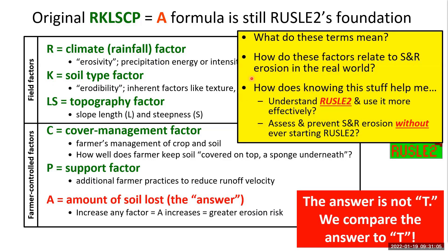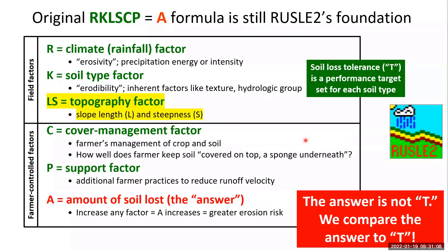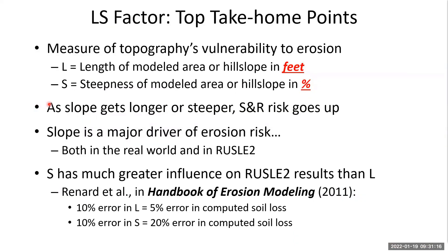So what do these terms mean? How does this help us understand erosion, whether we're using RUSLE2 or not? Let's dig into the LS topography factor — slope length and steepness. Take-home points: LS values are a measure of the topography's vulnerability to erosion. L is the length of the modeled area or hillslope in feet, and S is steepness in percent. As a slope gets longer or steeper, your sheet and rill erosion risk goes up.